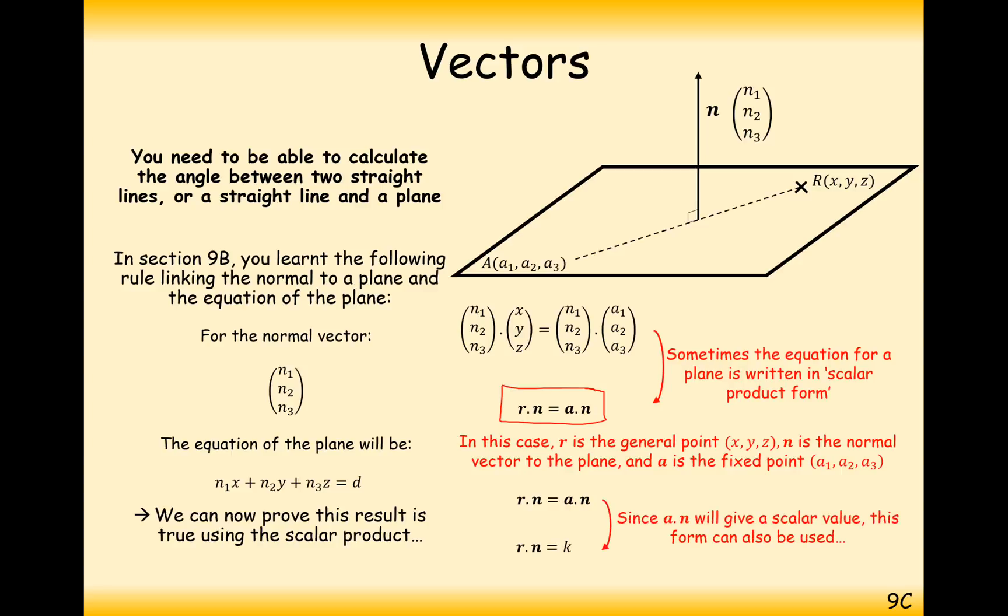And generally we can simplify the a.n here, because we're given both of those in our question, or we're asked to find them out in some way. And we can do the dot product between those two vectors, and we get k. So this here is also how it's written as well, where you can convert from one to the other by doing a.n equals the k value there.